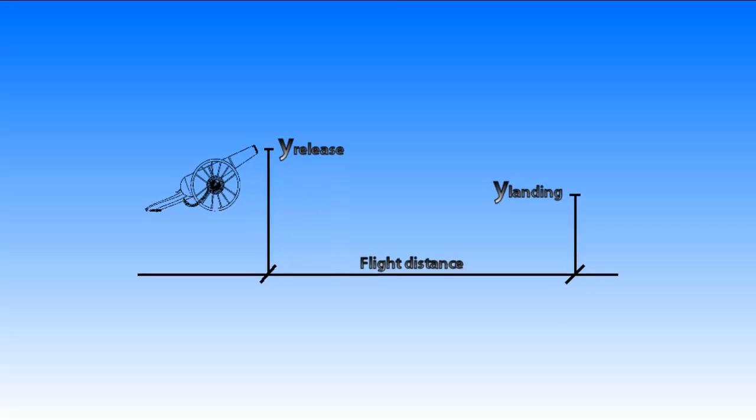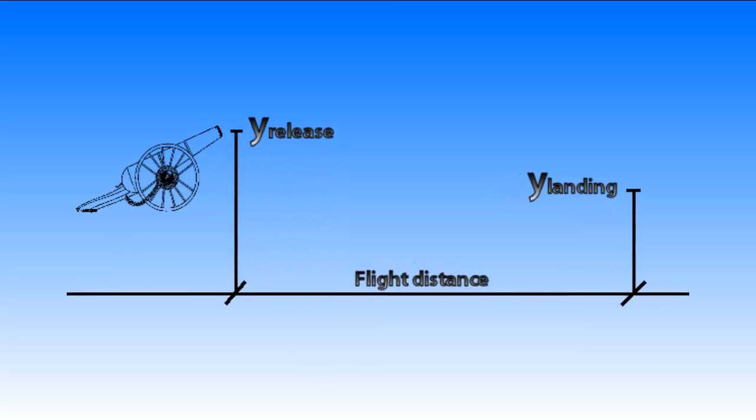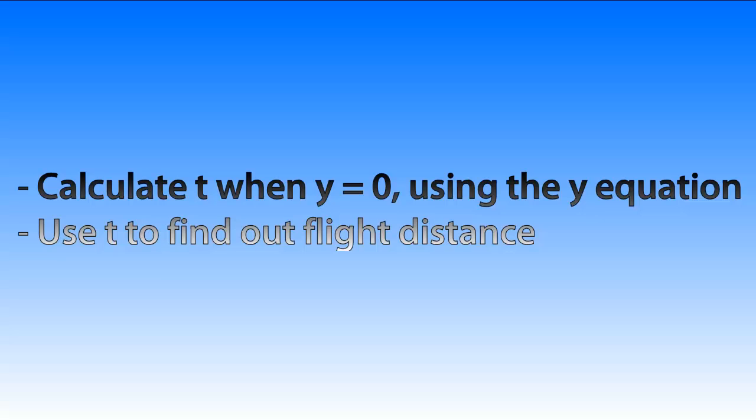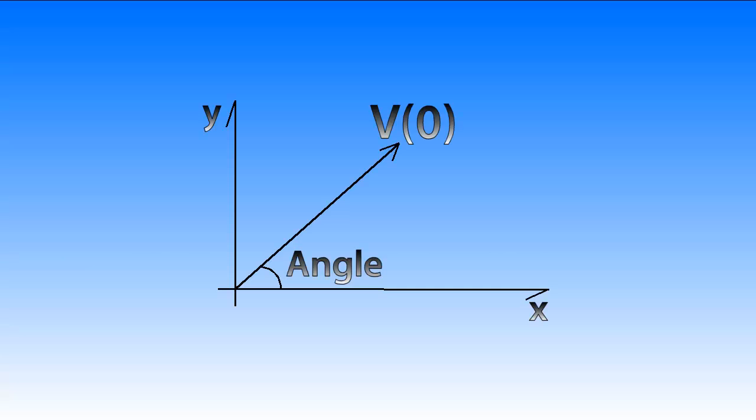Also we assume that the height of the launch and landing are given. So we will solve the problem as follows. First we're going to calculate when gravity makes the object hit the floor at y is 0 using the y equation. Then we're going to use the time obtained from that to find out how far the object flew in that time.